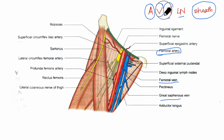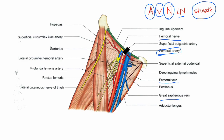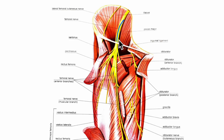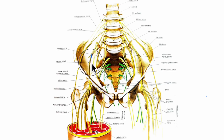The first nerve in the femoral triangle is the femoral nerve. It lies lateral to the femoral artery, outside the femoral sheath, and in the groove between the iliacus muscle and the psoas major muscle. The nerve to pectineus arises from the femoral nerve just above the inguinal ligament and passes behind the femoral sheath to reach the anterior surface of the pectineus muscle.